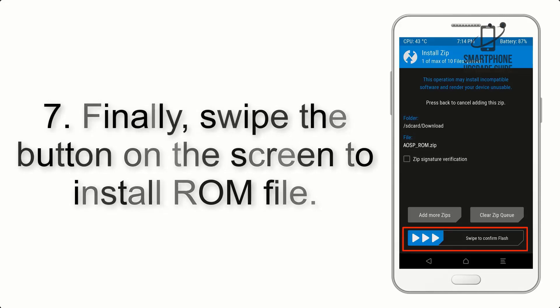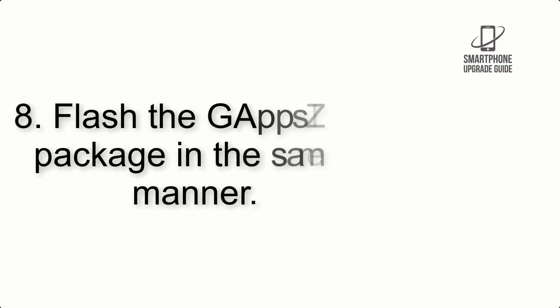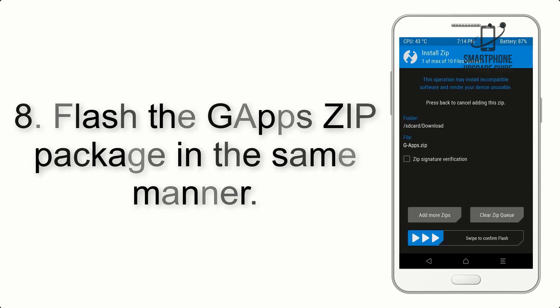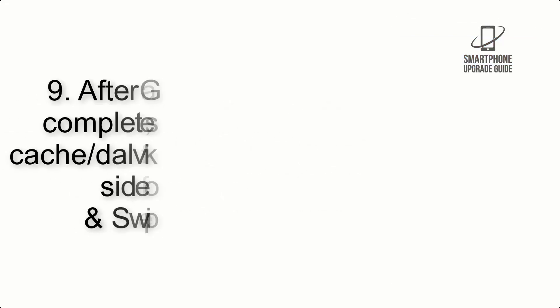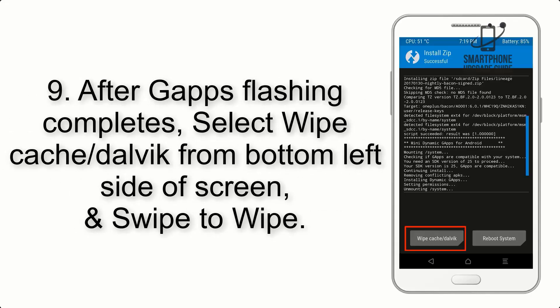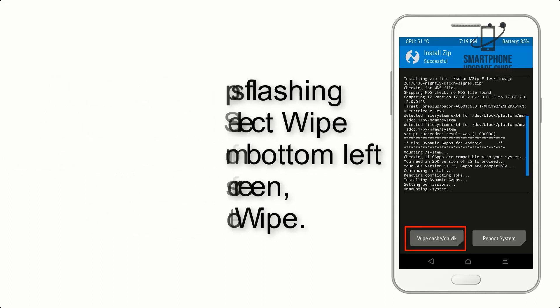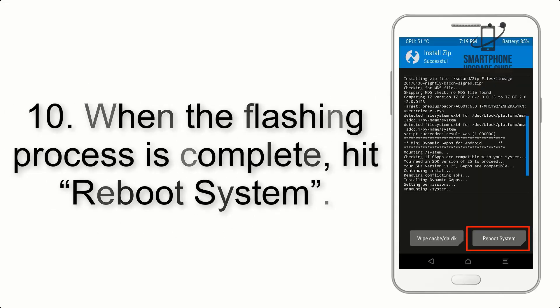Step 7: Swipe the button on the screen to install the ROM file. Step 8: Flash the GApps zip package in the same manner. Step 9: After GApps flashing completes, select Wipe Cache and Dalvik from the bottom left side of the screen and swipe to wipe.